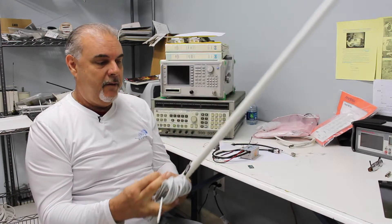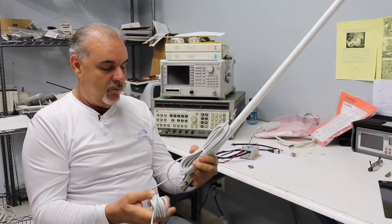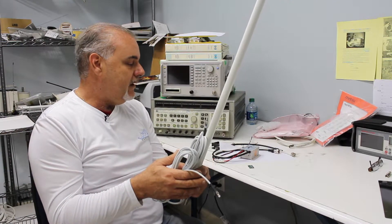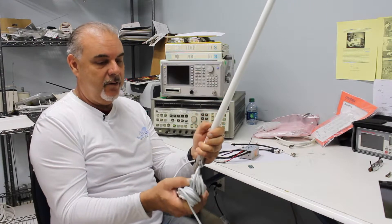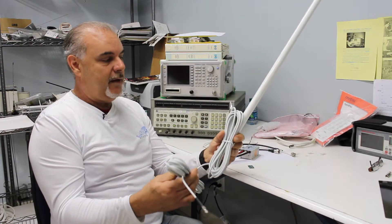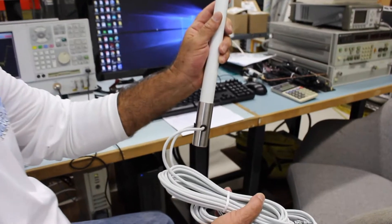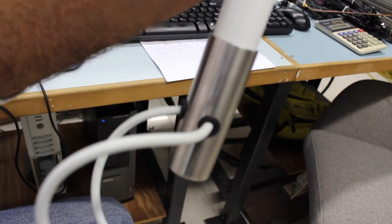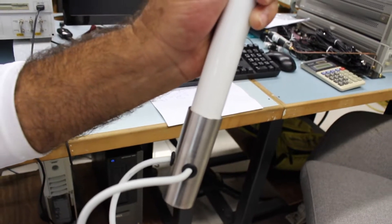Basically we've built the signal splitter into the antenna housing itself, it's inside here. We've got two cables coming out and you simply plug in one cable into the VHF marine radio and the other cable into the AM FM radio.